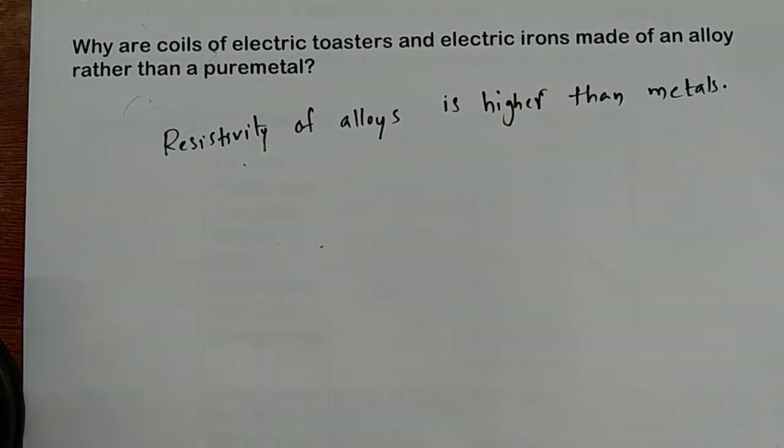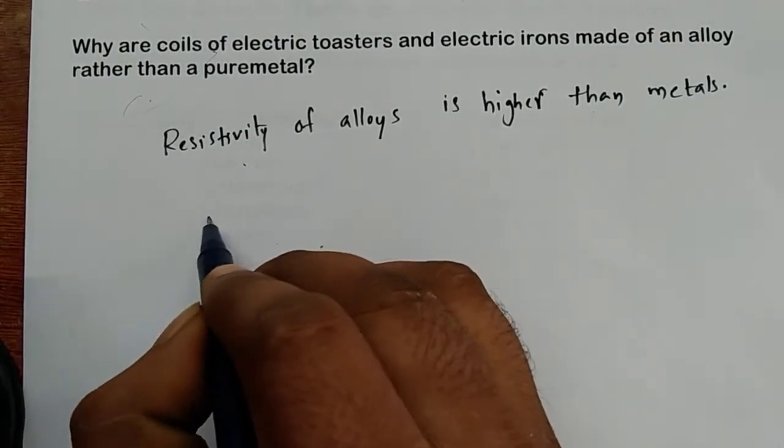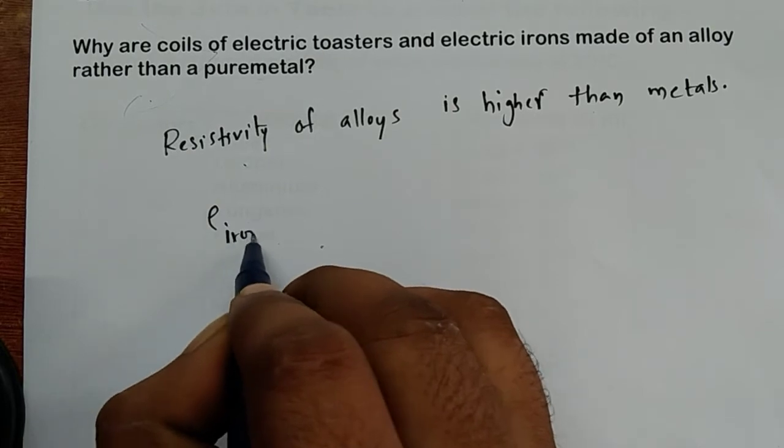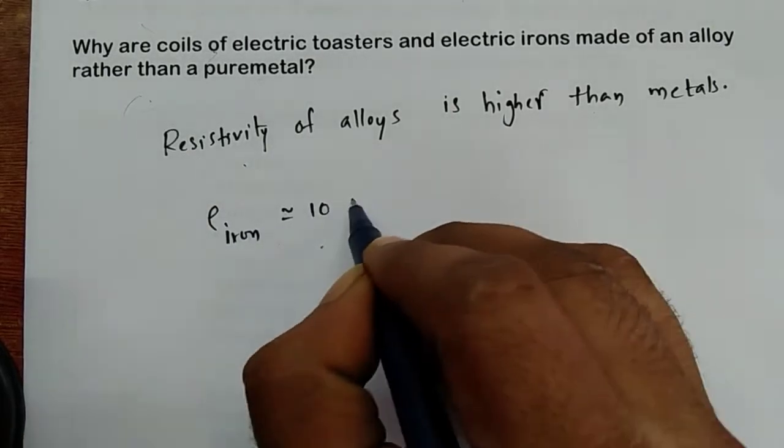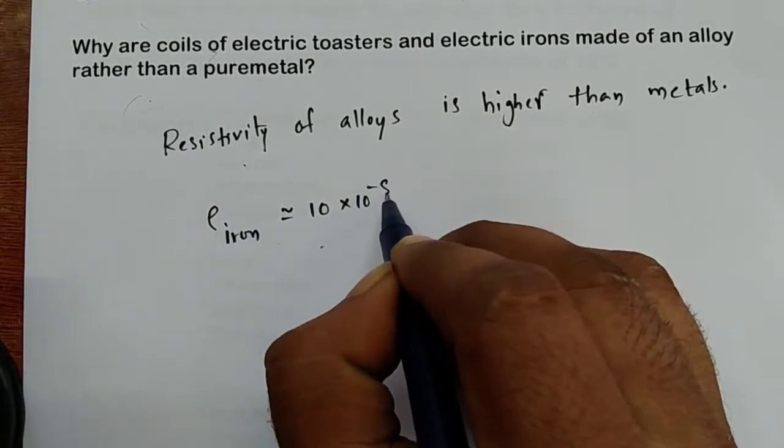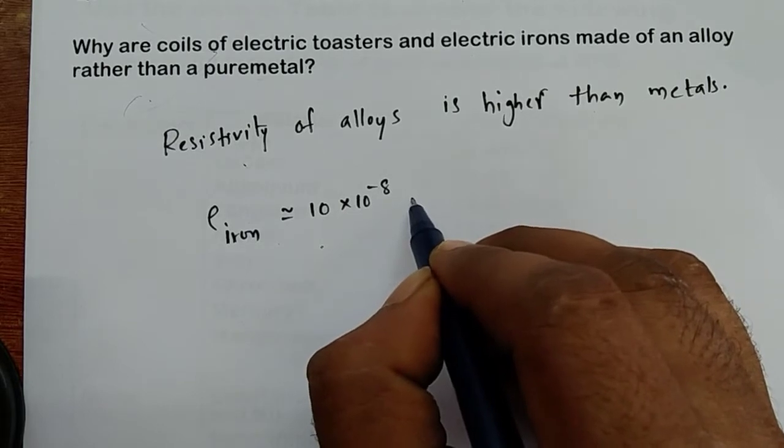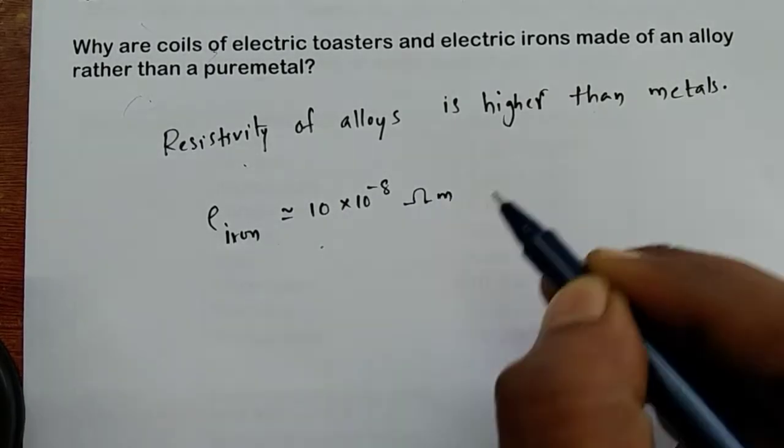For example, if you take the resistivity of iron, it's approximately 10 × 10^-8 ohm meter.